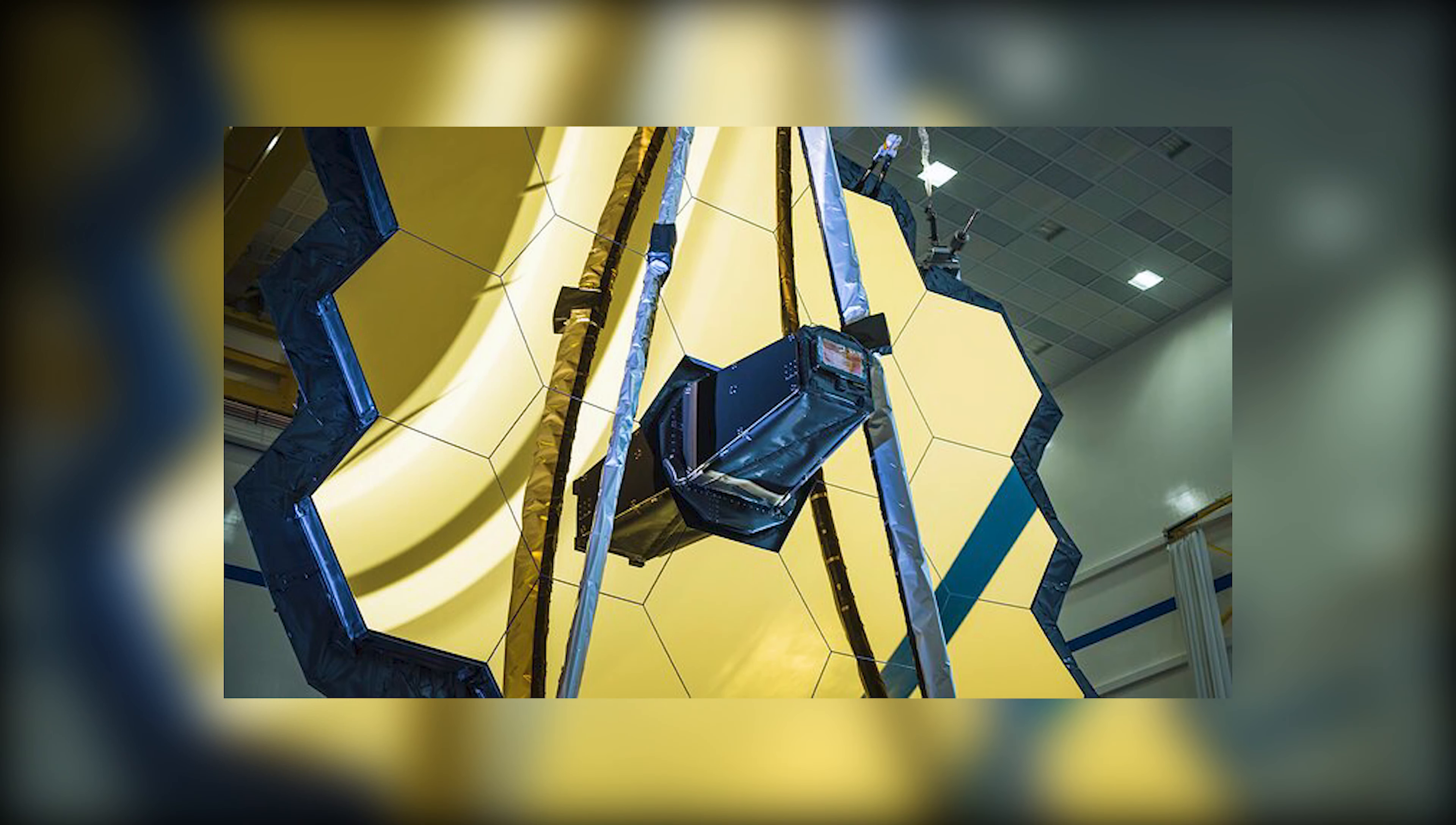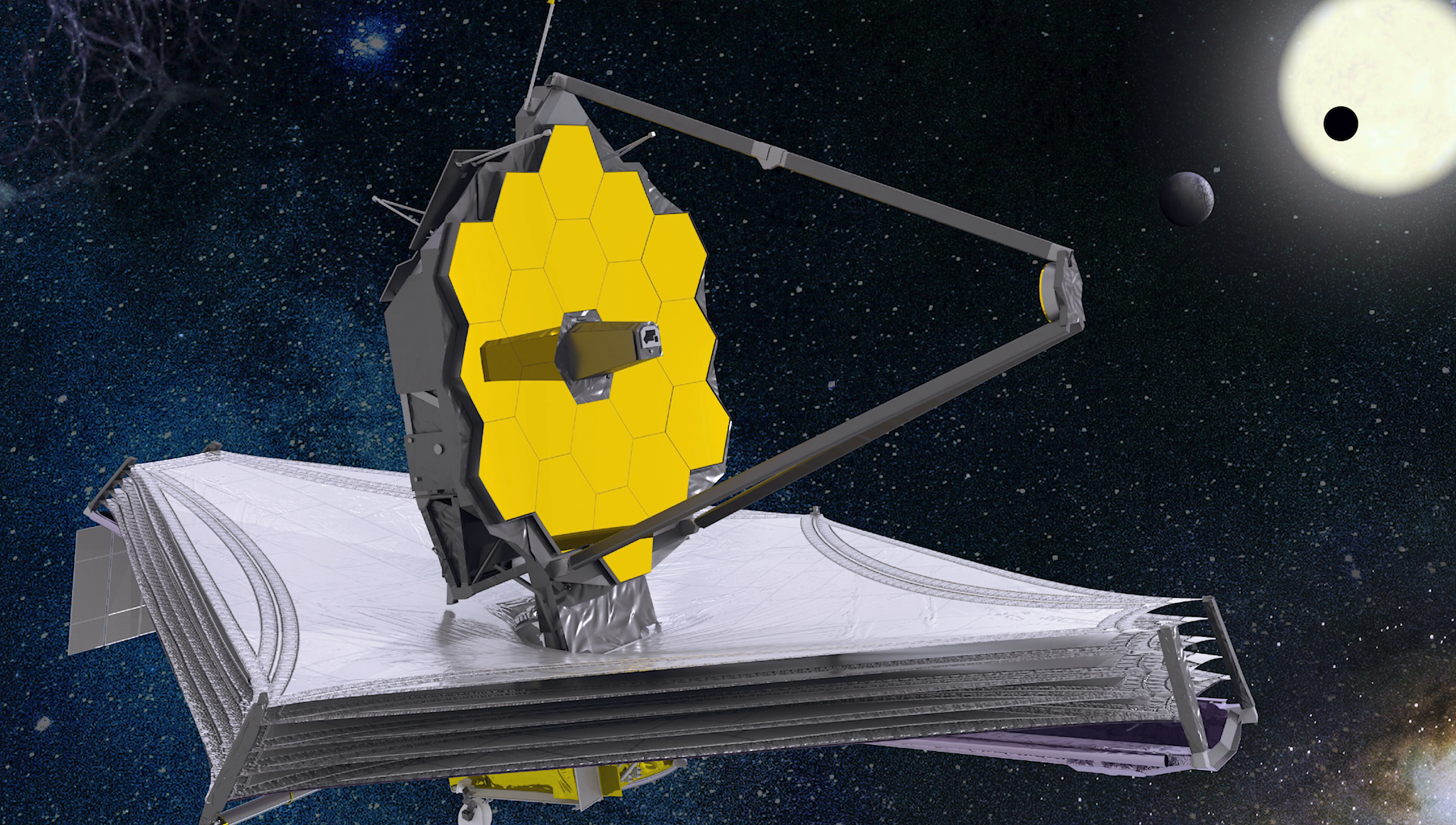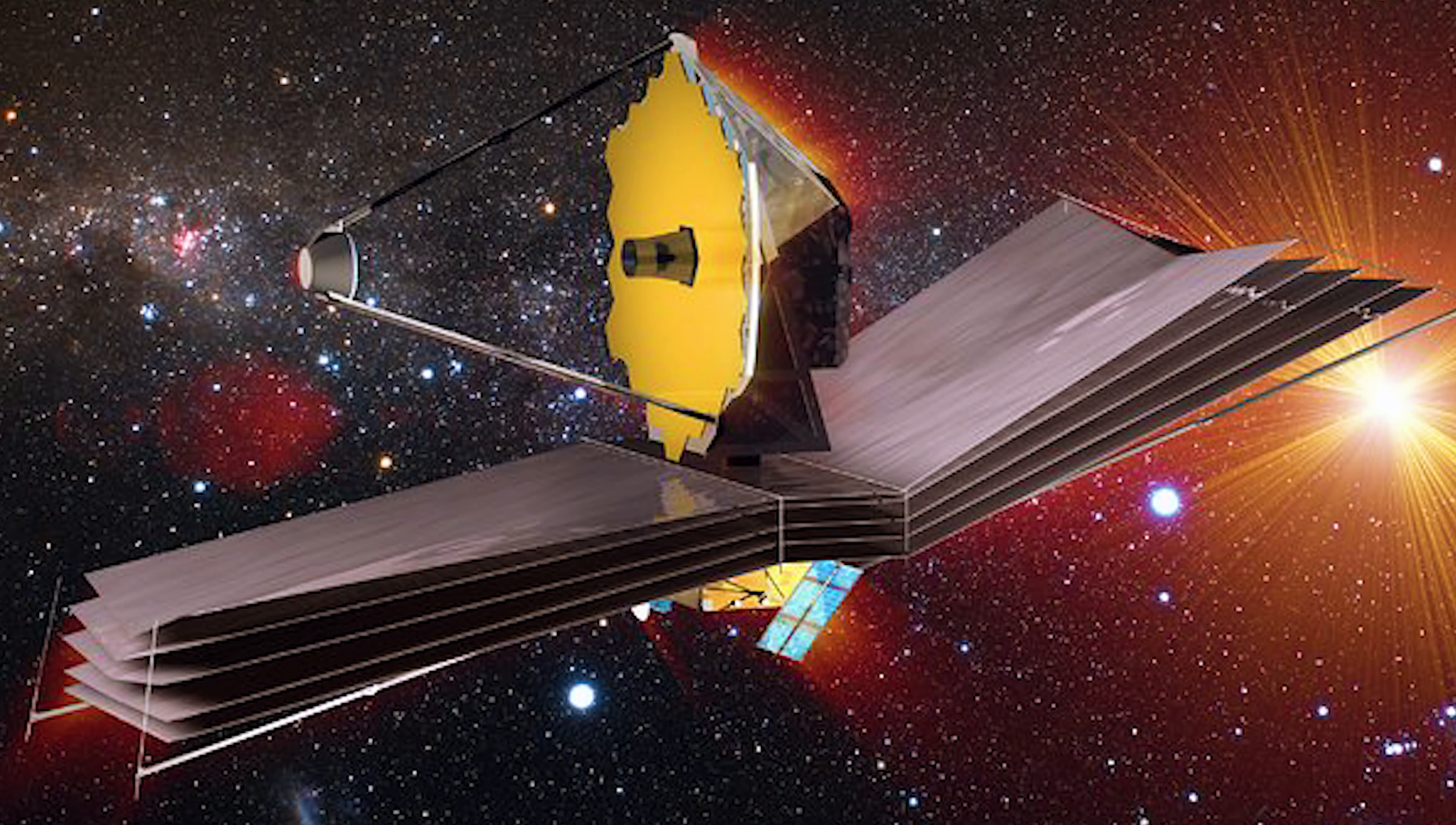The big sunshield on the James Webb Telescope makes it much bigger than the Hubble. This is used on all space telescopes, but the James Webb's infrared cameras make it especially important. If it isn't kept cool, it might not be able to see the light of things it is trying to study.